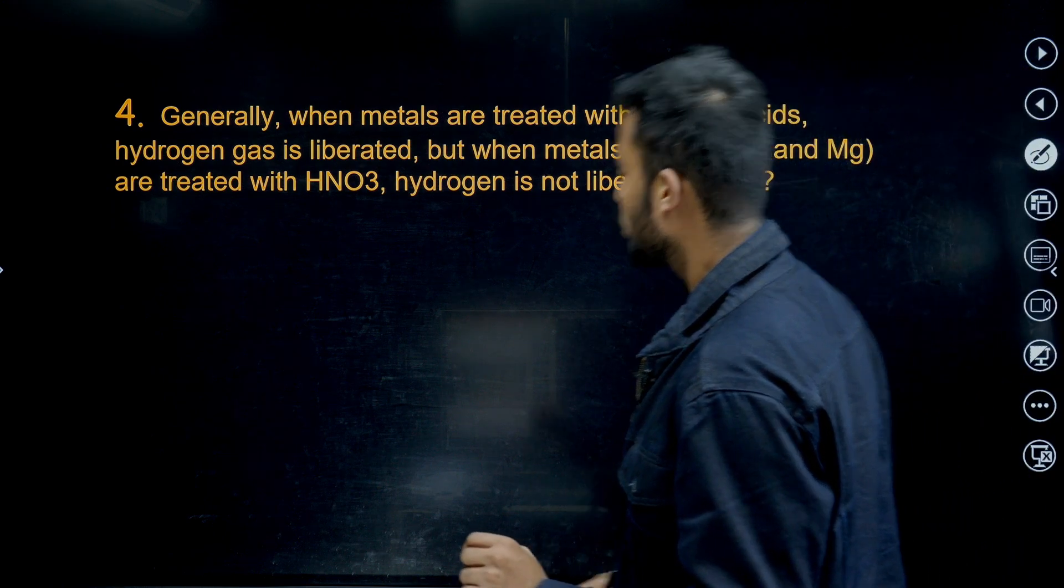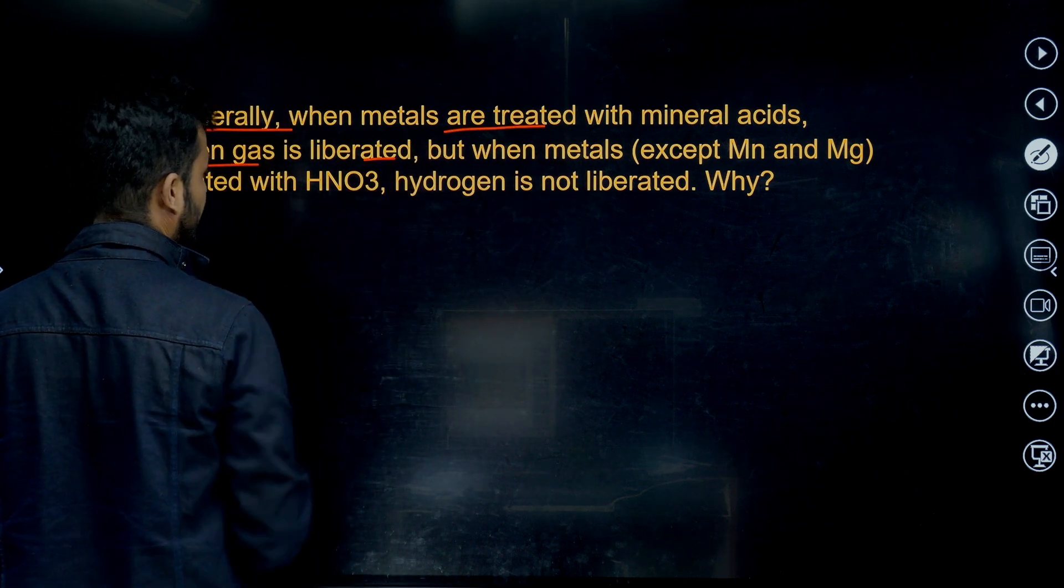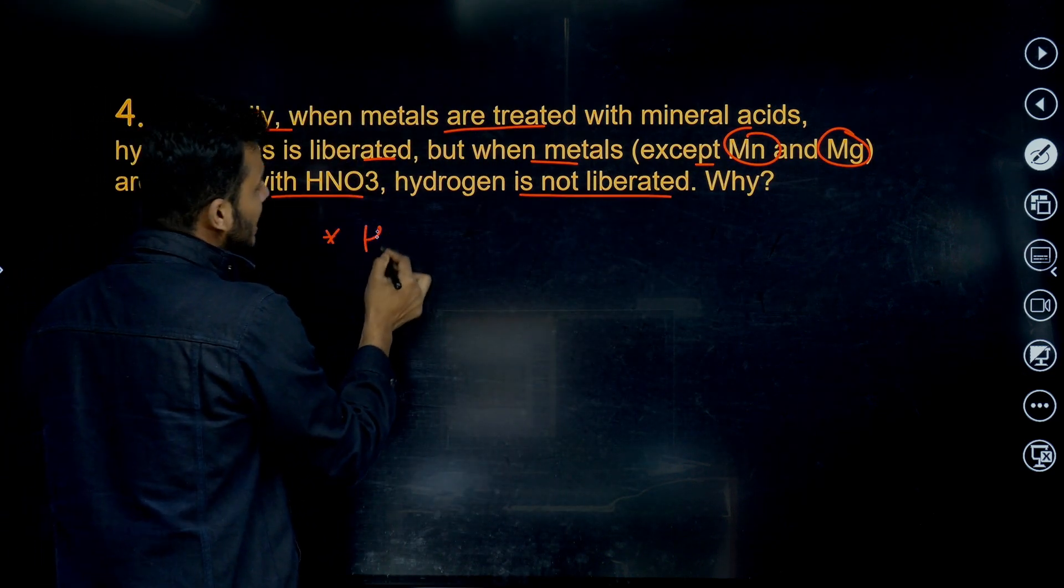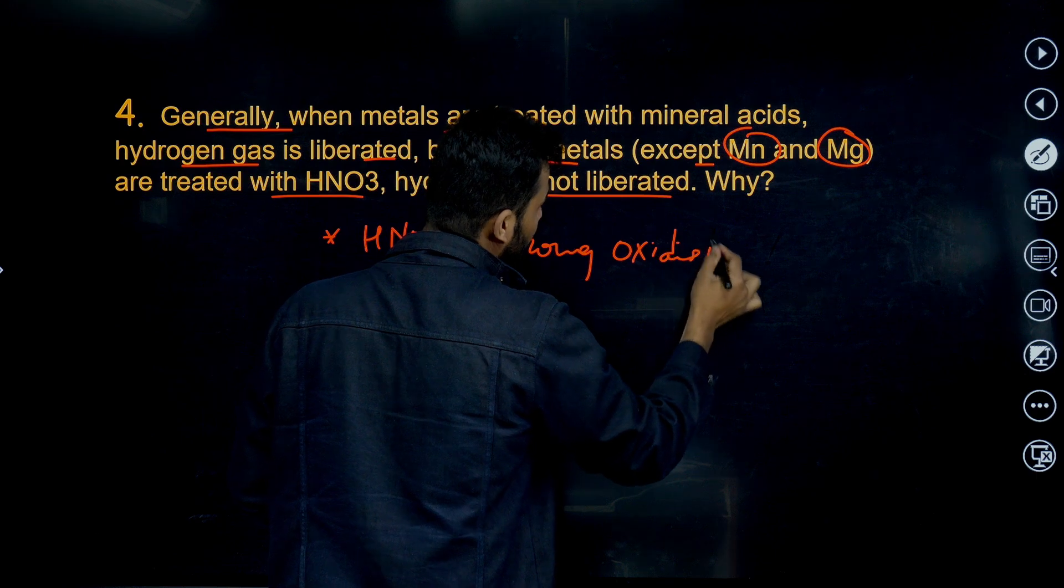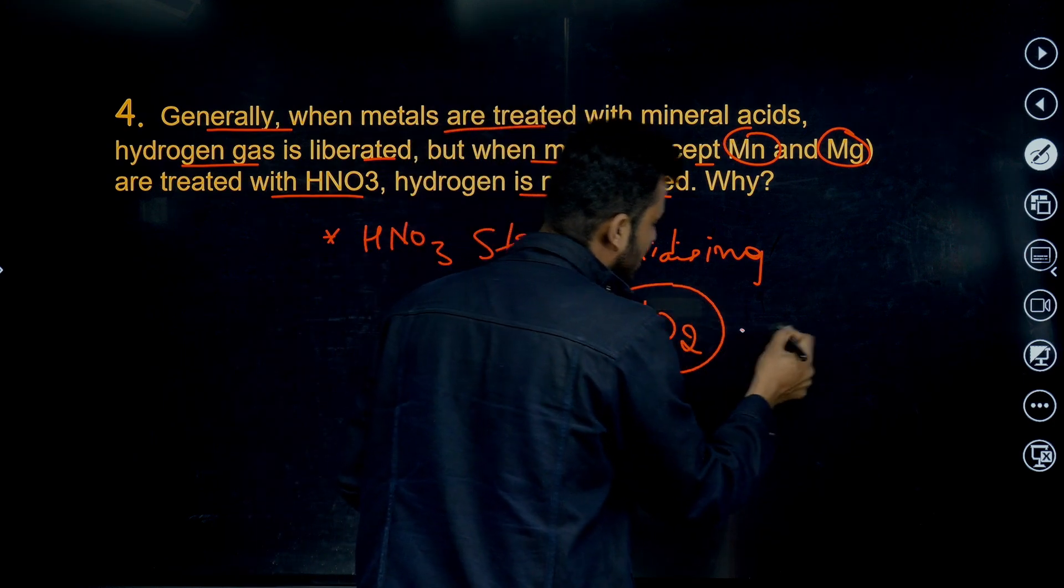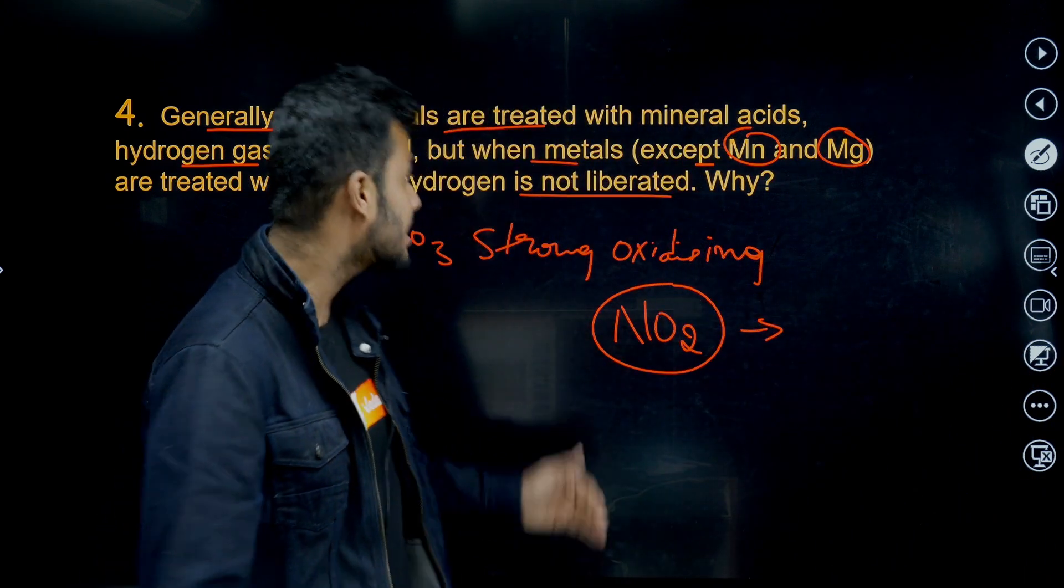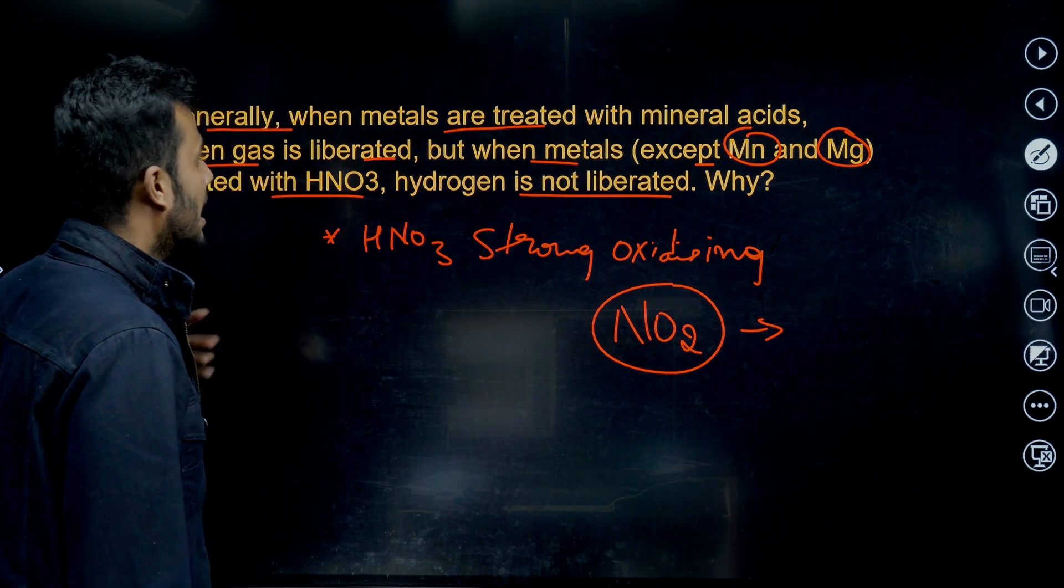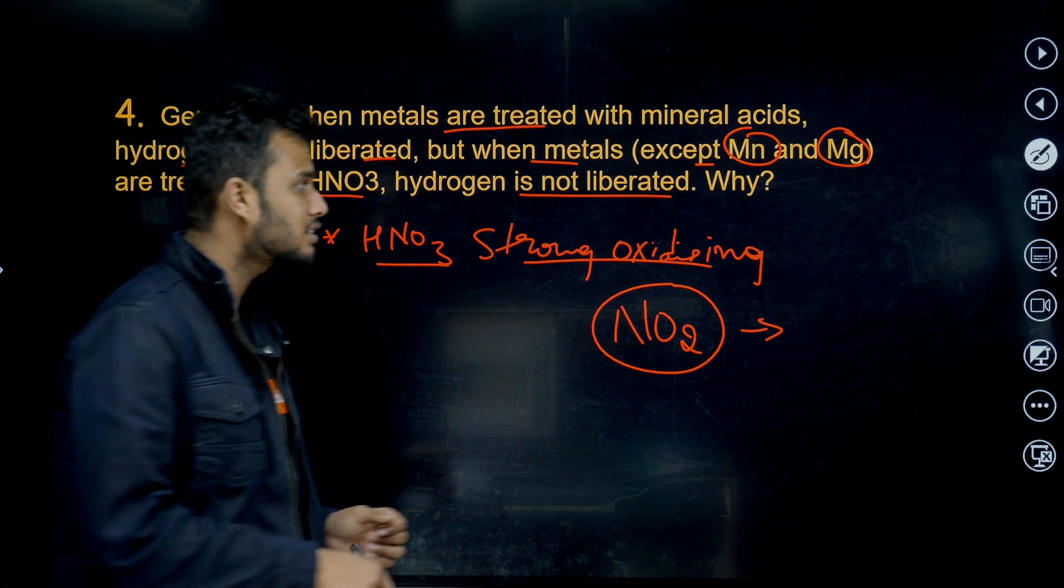Next question. 2019 question. Generally when metals are treated with mineral acids, hydrogen gas is liberated. Absolutely. But when metals except manganese and magnesium are treated with HNO3, hydrogen is not liberated. Why? Because HNO3 is a strong oxidizing agent. Whenever we treat now, instead of releasing hydrogen gas, it releases nitrous gas, NO2 gases. Because HNO3 is a strong oxidizing agent. Except manganese and magnesium, it never reacts with other metals.